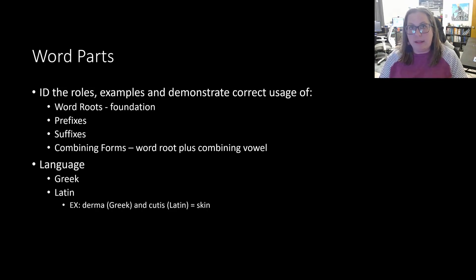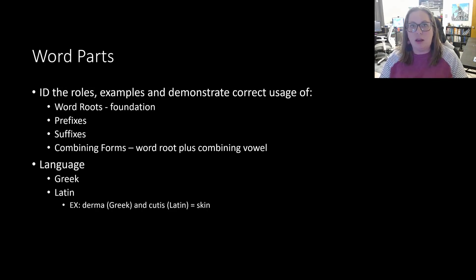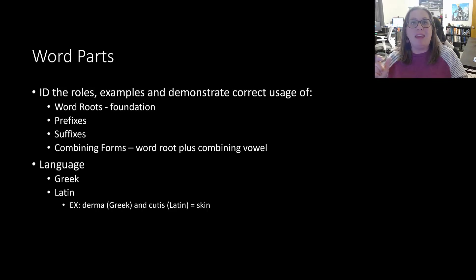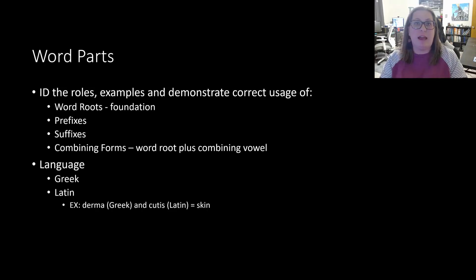This is the point throughout this first lecture. Word roots are really important because they're the foundation of the word — the main core meaning. That meaning can change if we add prefixes, which go at the front of the word, or suffixes that go at the end. You can have one of each, and it changes the entire idea of what that word means. When we add suffixes, we look at what we call the combining form of the word.